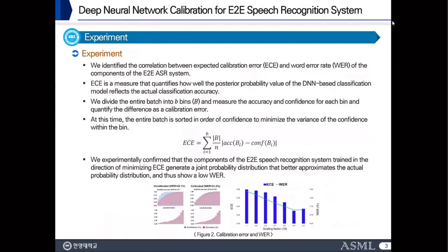ECE is the Expected Calibration Error, defined as the difference between accuracy and confidence. We experimentally confirmed that the components of the E2E system, trained toward lower ECE, generate a joint probability distribution that better approximates the true probability distribution. In this way, we calibrate the neural network output and make the combined distribution better.